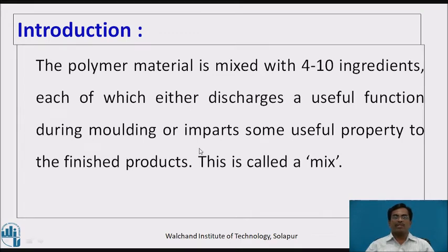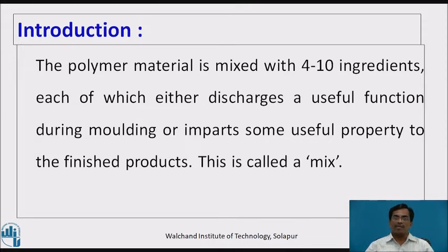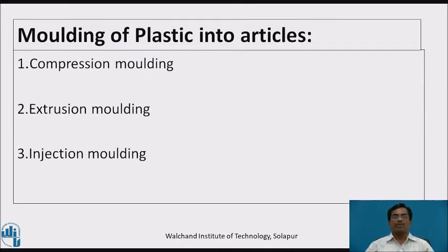In our day-to-day life we are using plastics at home, that is at the domestic level, as well as at the industrial level. This polymer is formed by mixing together a number of ingredients — 4 to 10 ingredients mixed with each other. Each ingredient either discharges a useful function during the molding operation or imparts some useful property to the finished products. This is called a mix. Today we are going to discuss three types of molding operations: first is compression molding, second is extrusion molding, and third is injection molding.